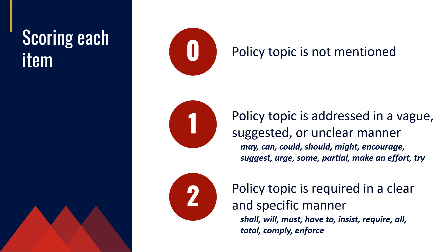One method for deciding between assigning a rating of 1 or 2 is to consider the scenario of a parent approaching the school district's Board of Education to discuss an issue. If the policy is ambiguous on how the school should handle the issue, assign the item a rating of 1. If the written policy gives clear guidance about how to decide whether the school is compliant with the policy, assign the item a rating of 2.